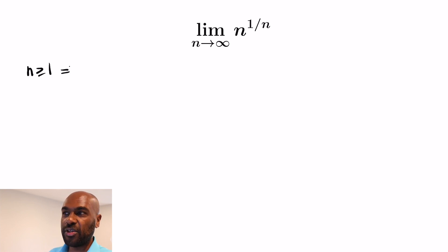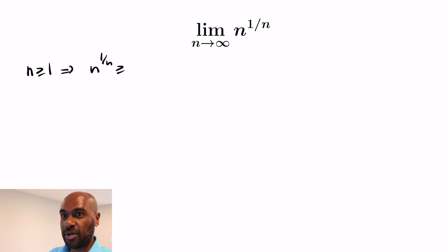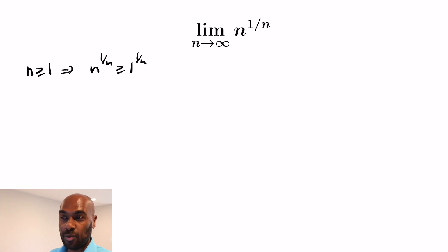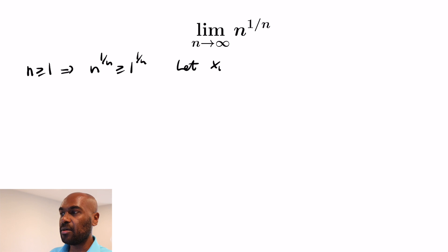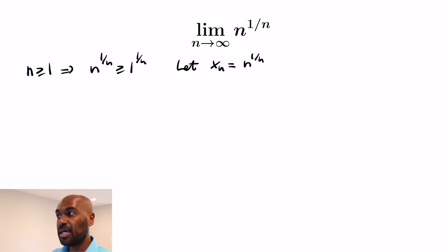We're going to start with this limit right over here. For n greater than or equal to 1, n to the 1/n is at least 1 to the 1/n, which is 1. So if we let x_n be the difference n to the 1/n minus 1, this is a non-negative number.